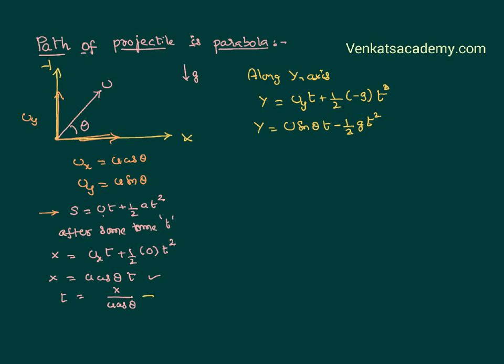Now, as I have already calculated the value of time from the previous equation for displacement along the x-axis, let me substitute it here. I can write y equals u sin theta, and in place of t, x by u cos theta minus half g. Again, in place of t, x by u cos theta whole squared.